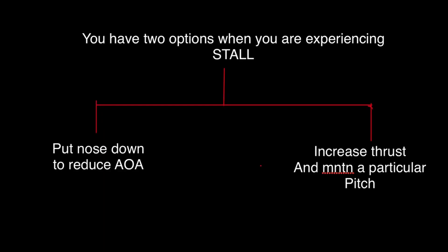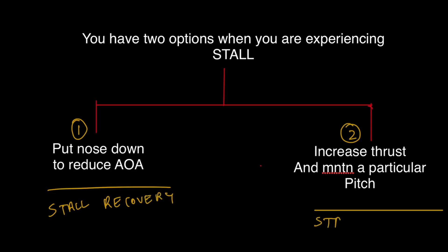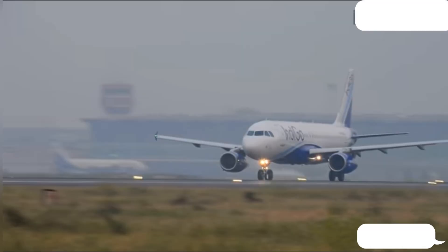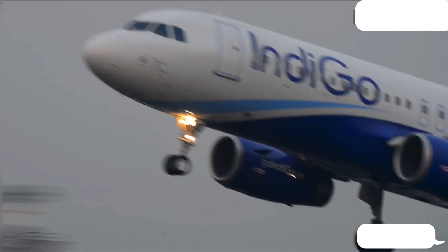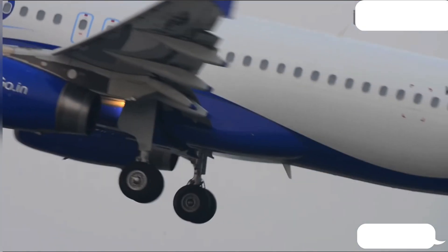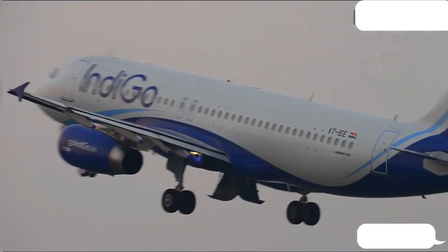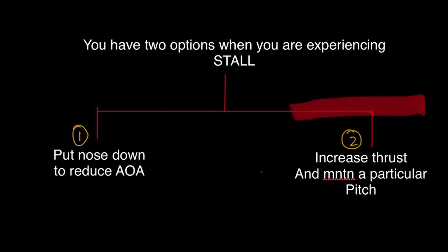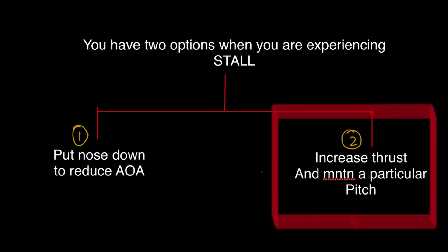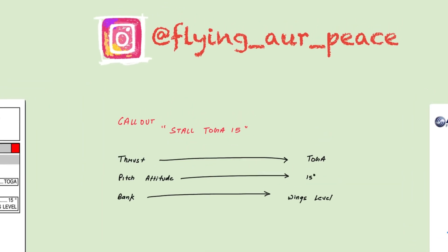You have two options in case of stall: one — put nose down; two — apply TOGA thrust and maintain a particular pitch. You cannot do nose down at such low heights. You may be barely a few hundred feet above the ground, and that is nothing — you cannot afford to lose height. So the second option is the only one remaining.